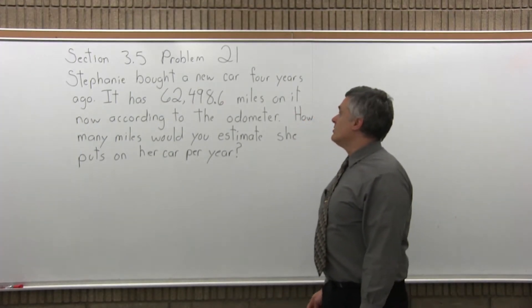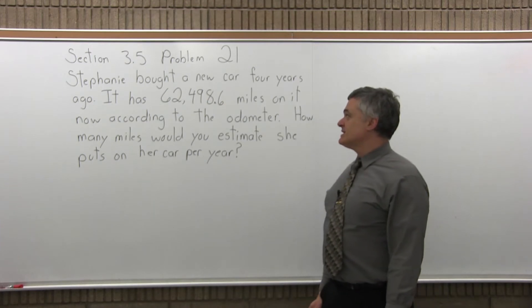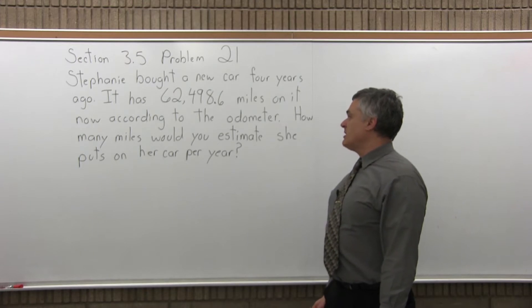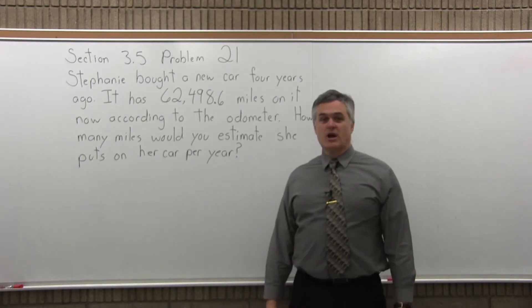It says, Stephanie bought a new car four years ago. It has 62,498.6 miles on it now, according to the odometer. How many miles would you estimate she puts on her car per year?